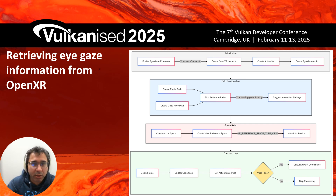We create an action set and create an eye gaze action, which is the standard way things are done in OpenXR. You create an action for anything you are going to be tracking, then bind that action to a certain path so the application can interpret the data. Then we do what's called action space setup, where you specify your view reference space. In this case we provide XR reference space type view, which anchors gaze tracking to the user's perspective, ensuring gaze calculations are from the user's viewpoint.